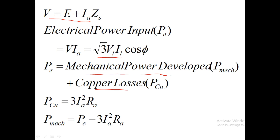In case of every motor, that power which is converted to a torque will be termed as mechanical power. So we can say mechanical power equals electrical input power minus copper losses. Total copper losses is 3 into Ia squared Ri.